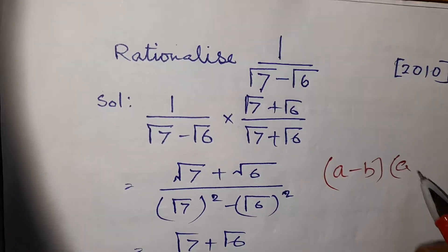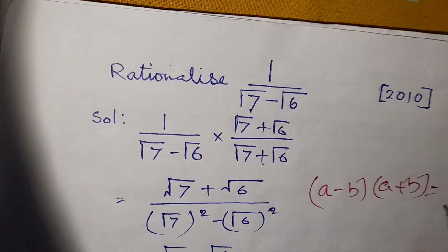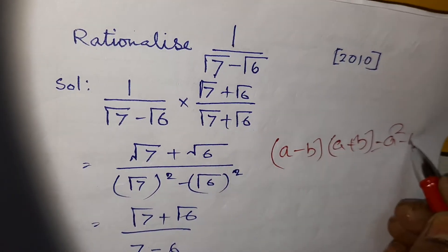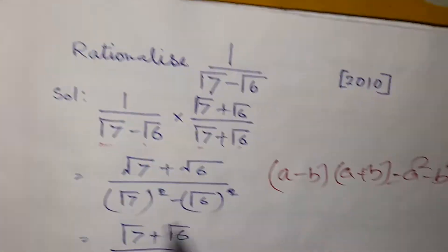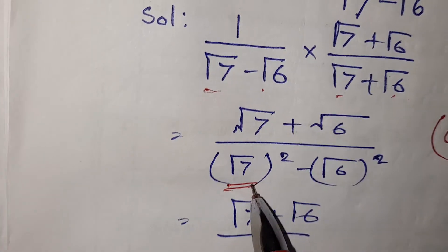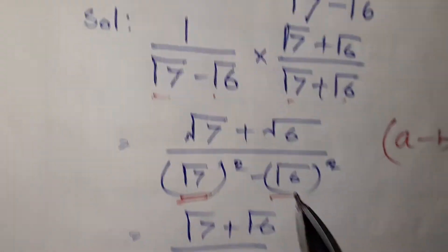The very famous formula: a minus b and a plus b equals a square minus b square. So here, root 7 minus root 6 into root 7 plus root 6 will be root 7 whole square minus root 6 whole square.